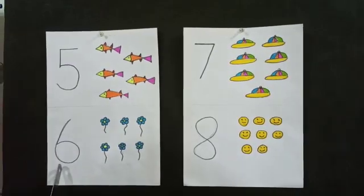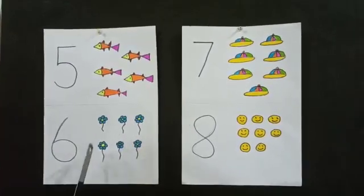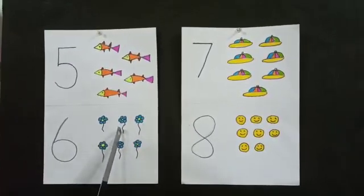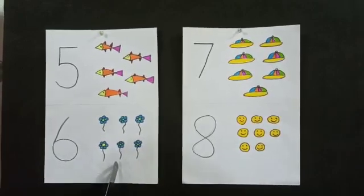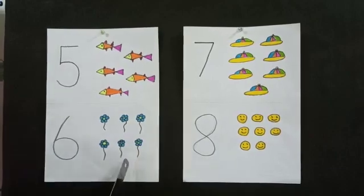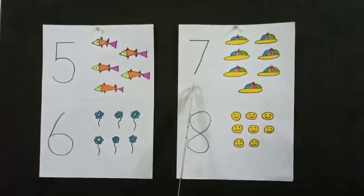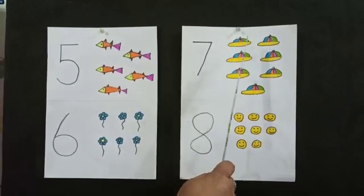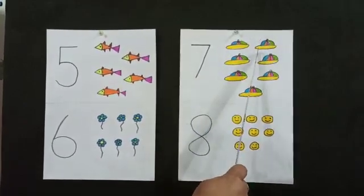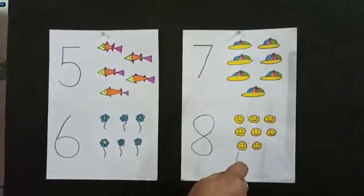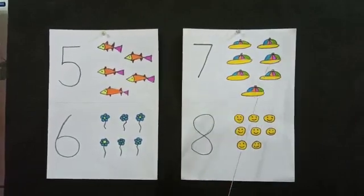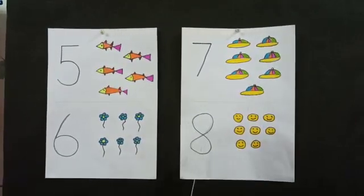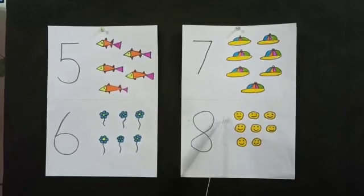Number 6. How many flowers? One, two, three, four, five, and six. Number 7. How many caps? One, two, three, four, and seven.